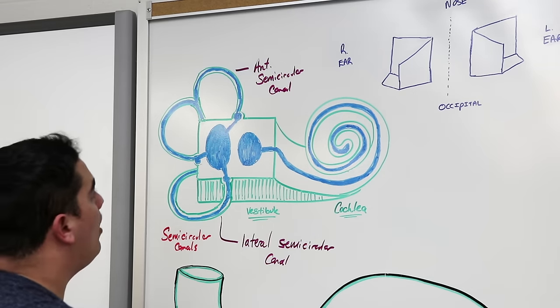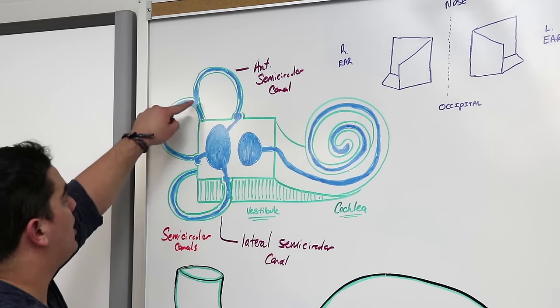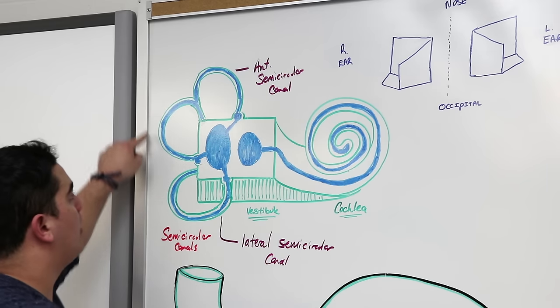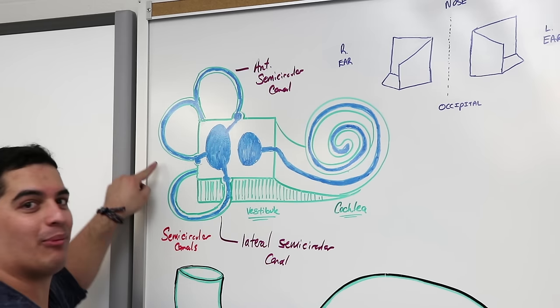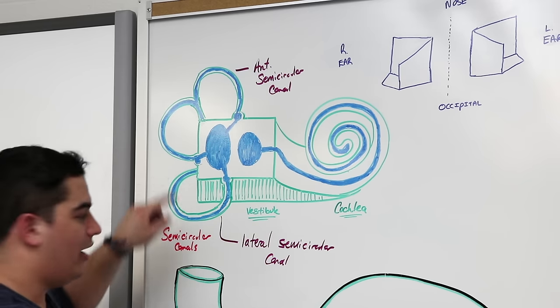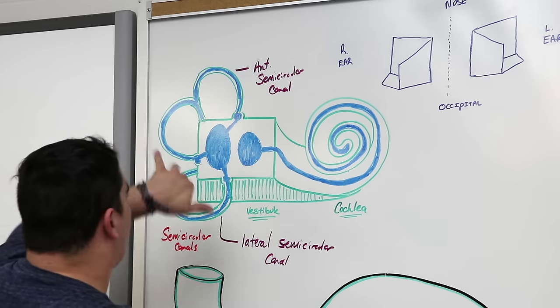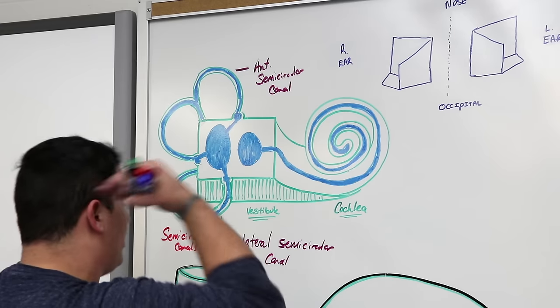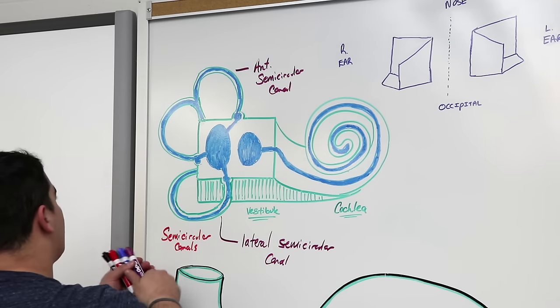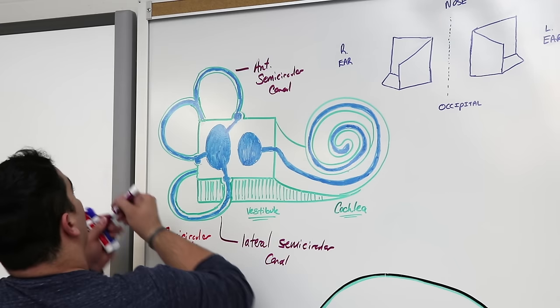Then you have one more which is going to be coming in the posterior part, going backwards. This is going to be called the posterior semicircular canal.